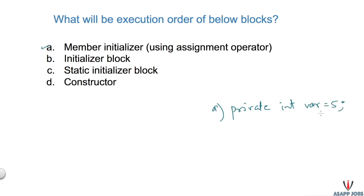Similarly, an initializer block in Java is surrounded by curly brackets. Inside it, we can assign member variables and call any particular method or operation before constructing the object where we have defined this initializer block.